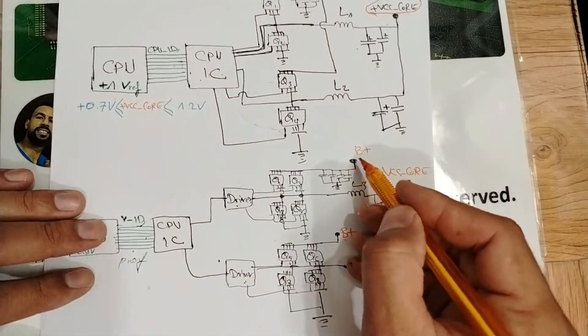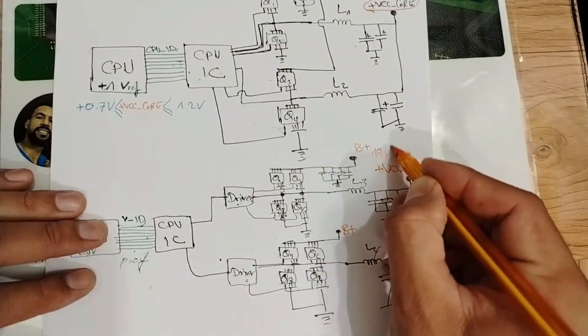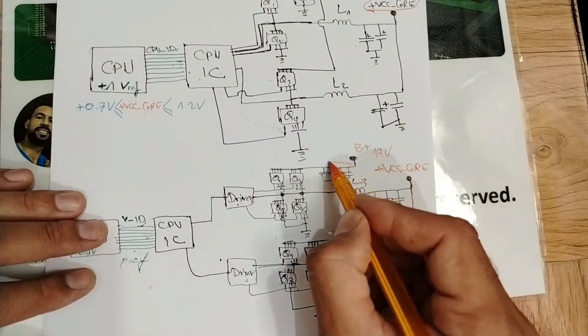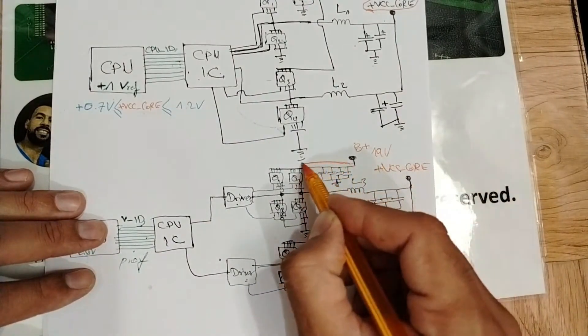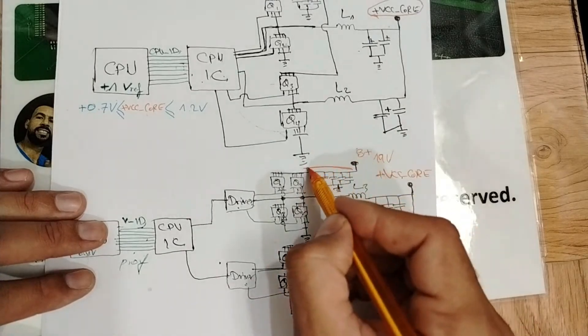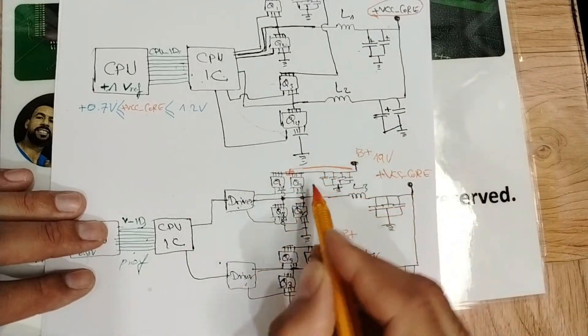Here we have B+ basically 19 volts. It will pass through the ceramic capacitors to be filtered, then it will be applied here to this MOSFET.